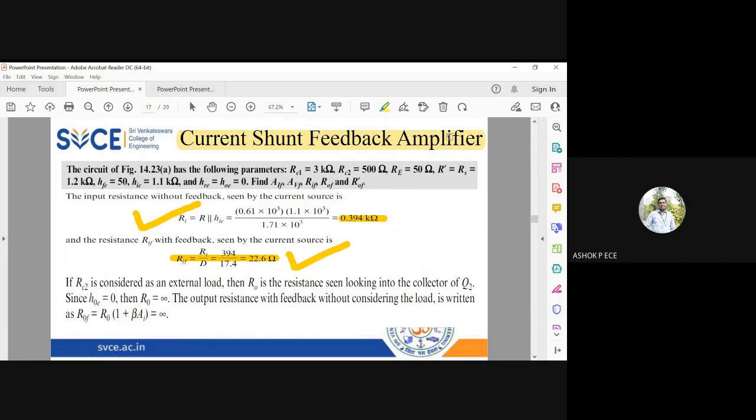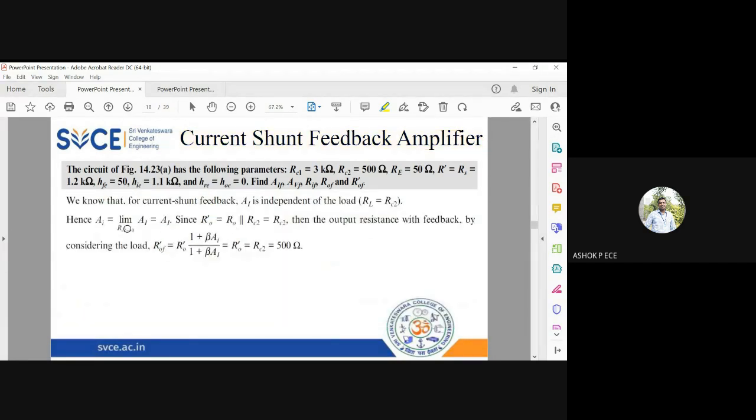R naught is infinity, and r naught f is also going to be infinity. R naught dash is going to be equal to rc2, and rc2 value is given as 500 ohms. R naught f dash is also equal to rc2.